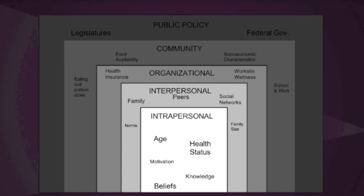It starts with the intrapersonal level — things like our own health status, and factors like age and beliefs. Surrounding that are interpersonal influences, such as family, peers, and norms. Then we get to organizational influences, such as insurance or worksite wellness. Then to community — things like food availability, eating out and portion sizes, and socioeconomic status. Until we finally reach public policy, like the large soda ban or taxing tobacco.